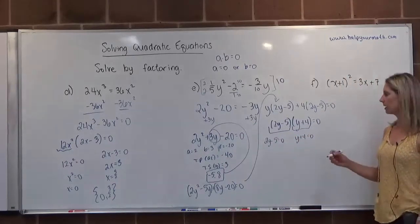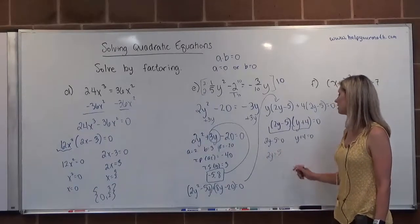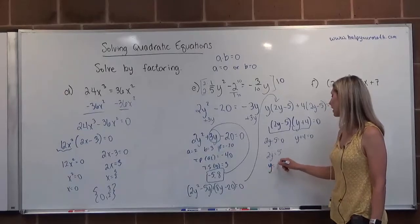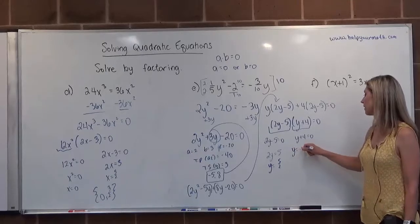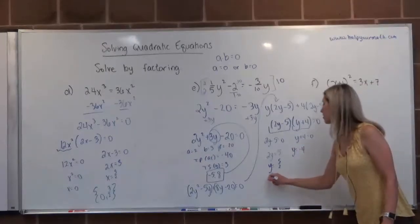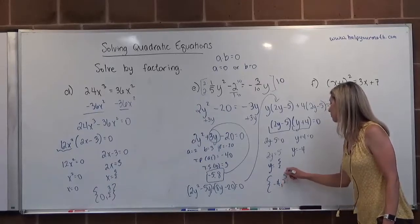Solve each one separately. I'll add 5 to both sides. That would give me 2y equals 5. Divide both sides by 2 here, and I would get y equals 5 over 2. For the second one, subtract 4 from both sides, we get y equals negative 4. So this one has two solutions, negative 4 and 5 over 2.